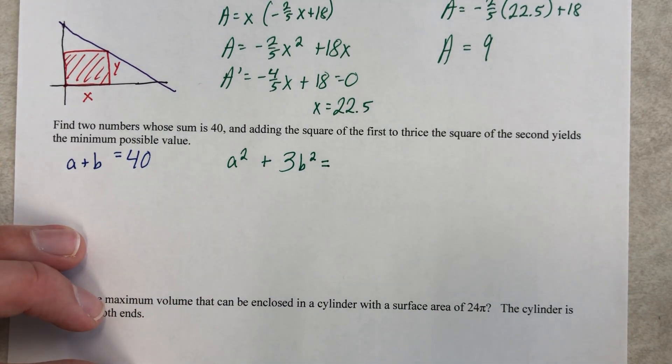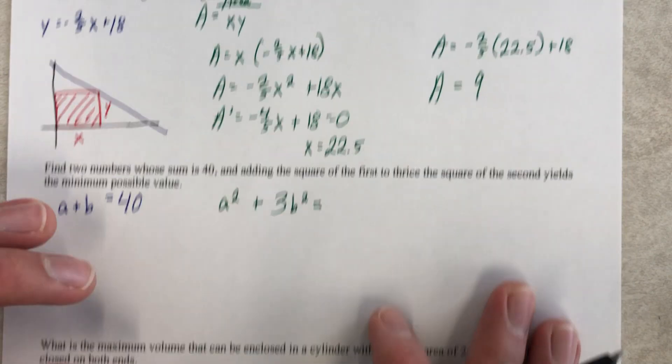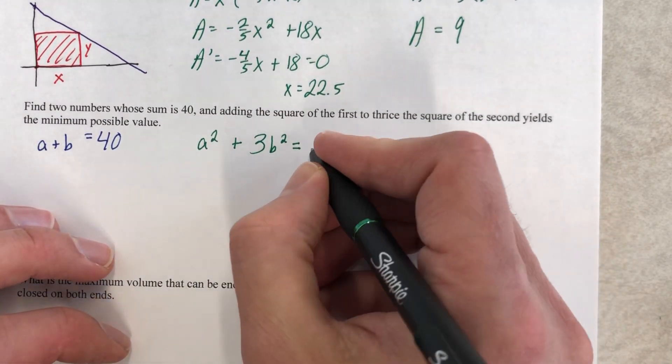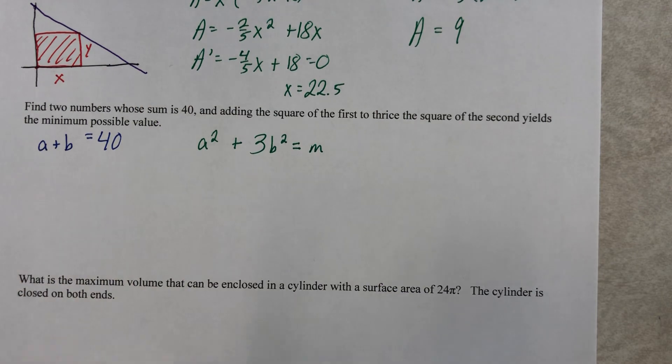We don't know. And that's it. We didn't know the area here. We didn't know the area here. We don't know the minimum possible value. What do you want to call it? I'm gonna call it M for minimum. Don't panic. You've done this.